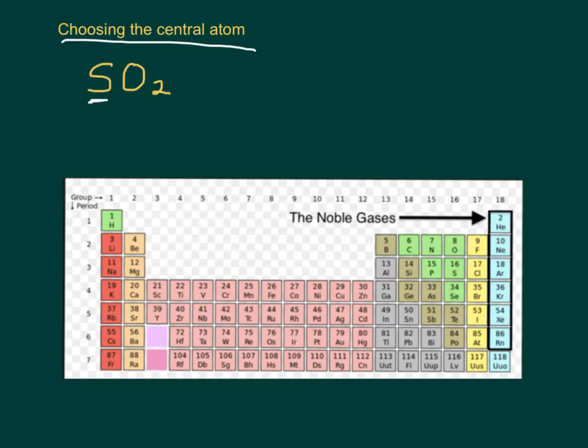It might be the atom that's written first - sounds like sulfur. It might be the atom with the lower electronegativity. So do you remember electronegativity? Electronegativity increases this way and this way. So who's got the lower electronegativity, S or O? S. So all of our clues are pointing towards sulfur as our central atom.